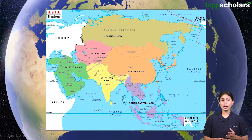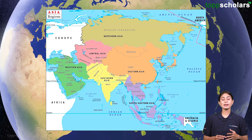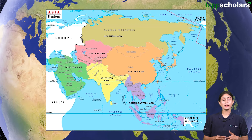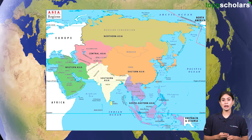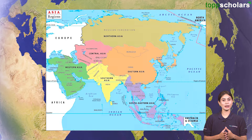The six regional divisions are: Northern Asia, Western Asia, Central Asia, Eastern Asia, Southern Asia, and Southeast Asia.